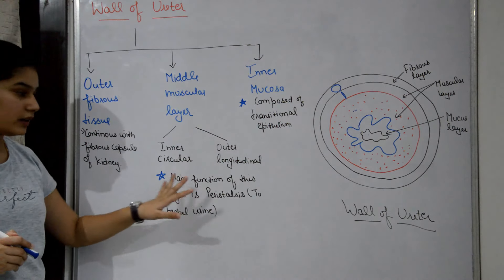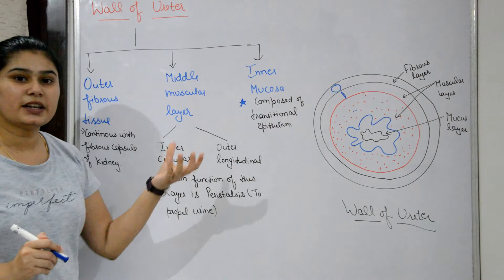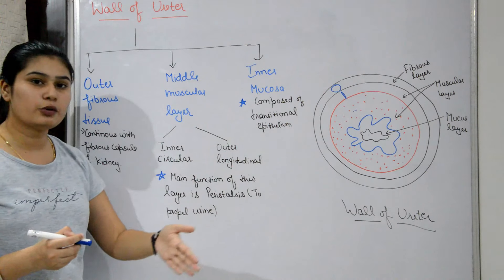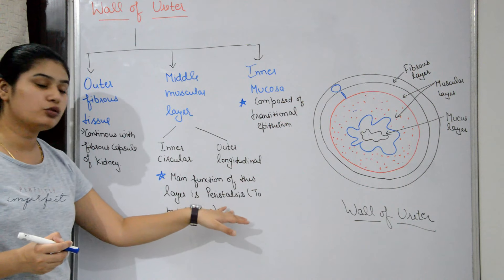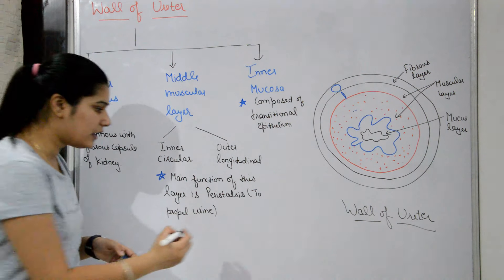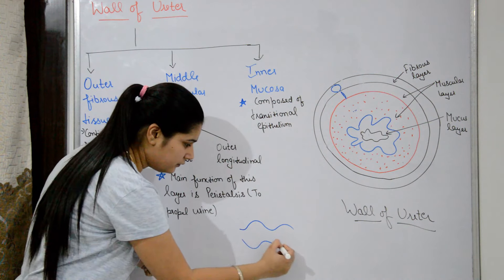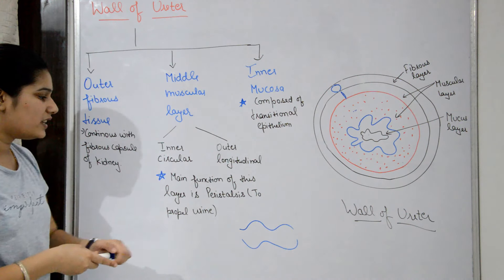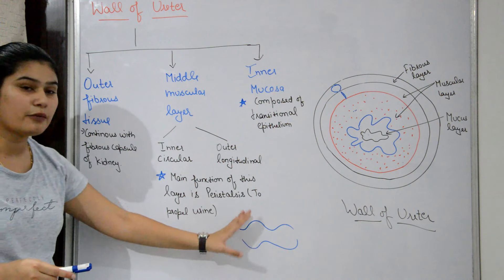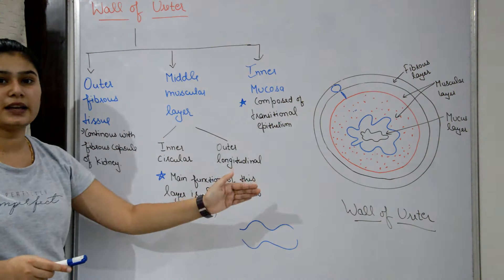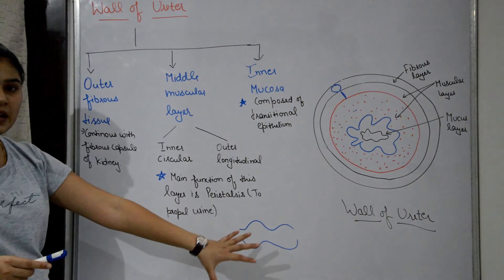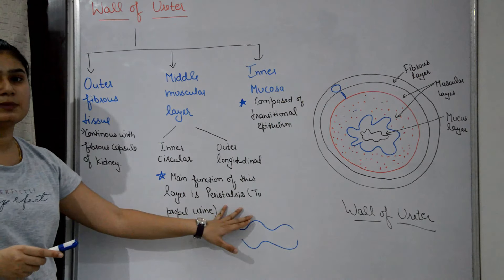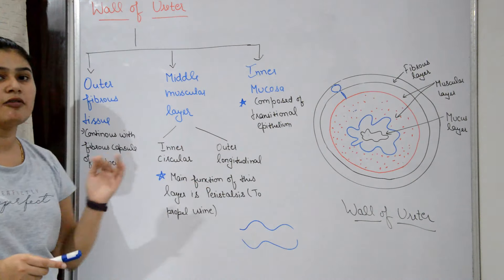The muscular layer performs peristalsis — a wave-like motion of alternating contraction and relaxation. Through this peristaltic wave-like motion, urine is propelled from the kidney through the ureter into the urinary bladder.